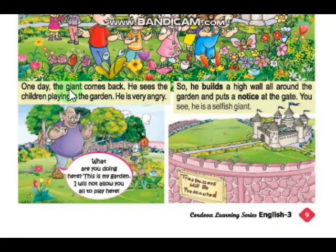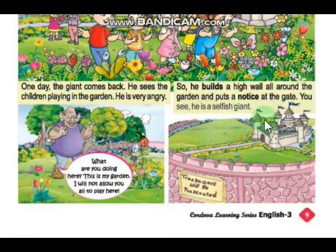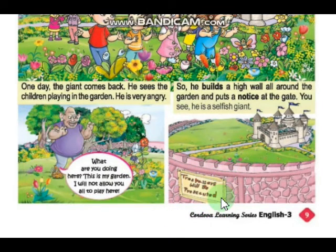One day, the giant comes back. He sees the children playing in the garden. He is very angry. He says, 'What are you doing here? This is my garden. I will not allow you all to play here.' So he builds a wall all around the garden and puts a notice on the gate — 'Trespassers will be prosecuted.' This means those who enter this compound without permission will be punished.